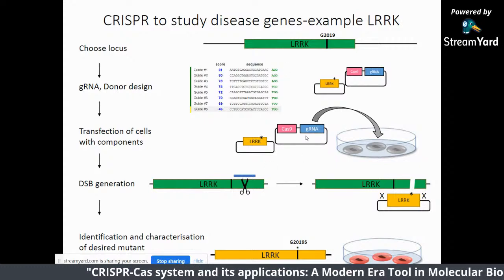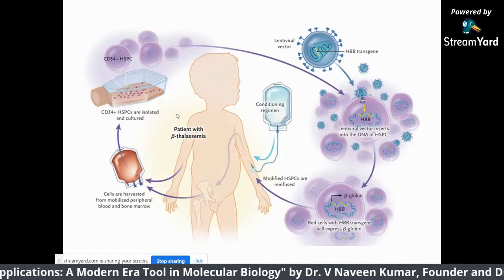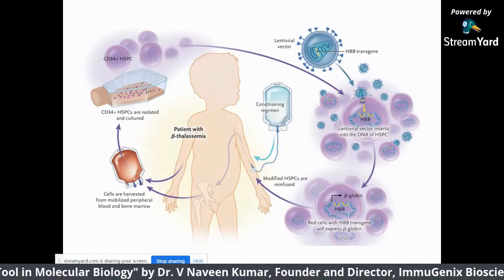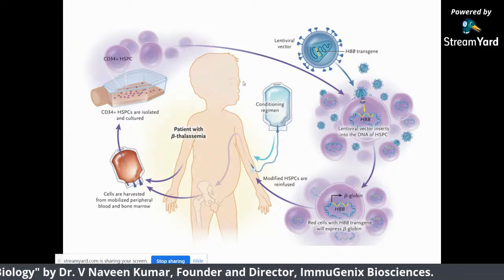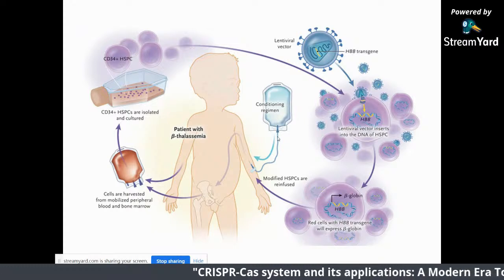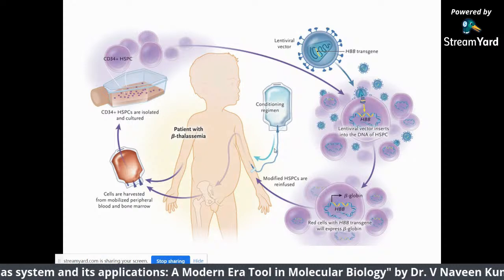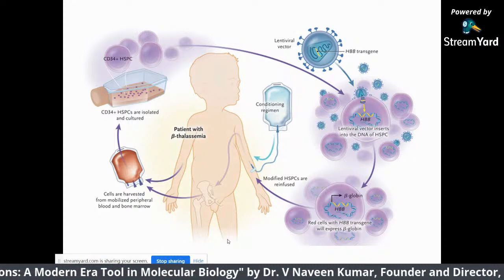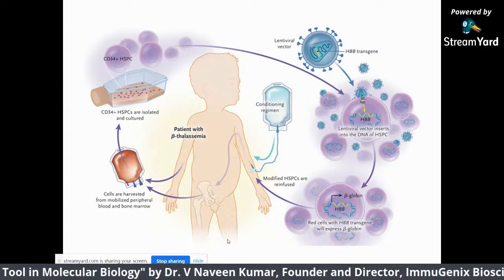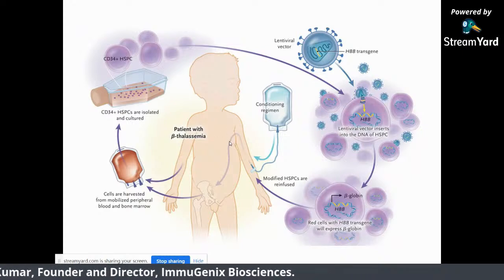Similarly, thalassemia can be edited — hematopoietic stem cells are taken and edited by delivery through lentiviral or adenoviral vectors. After modification of the beta-globin gene, the corrected cells are transferred back into the patient. Currently, CRISPR has been used for muscular dystrophy and even tried for color blindness — it worked well. There is also a case you may have heard of: a Chinese physician who modified DNA at the embryo level. There is no approval worldwide for human embryo editing — you can edit somatic cells, but not embryo cells.